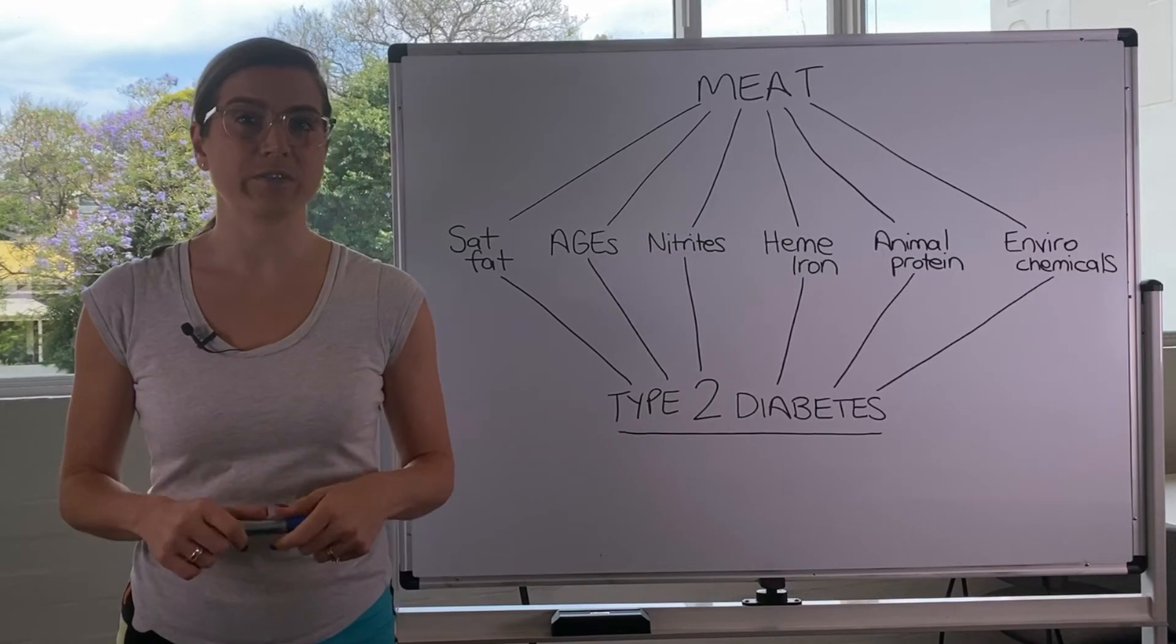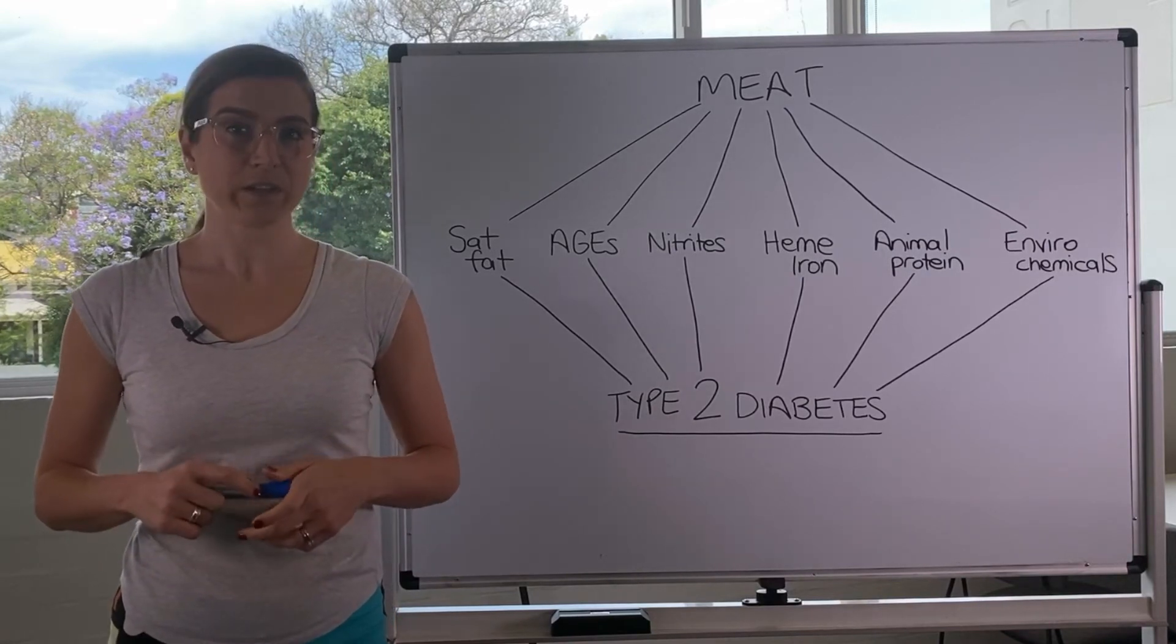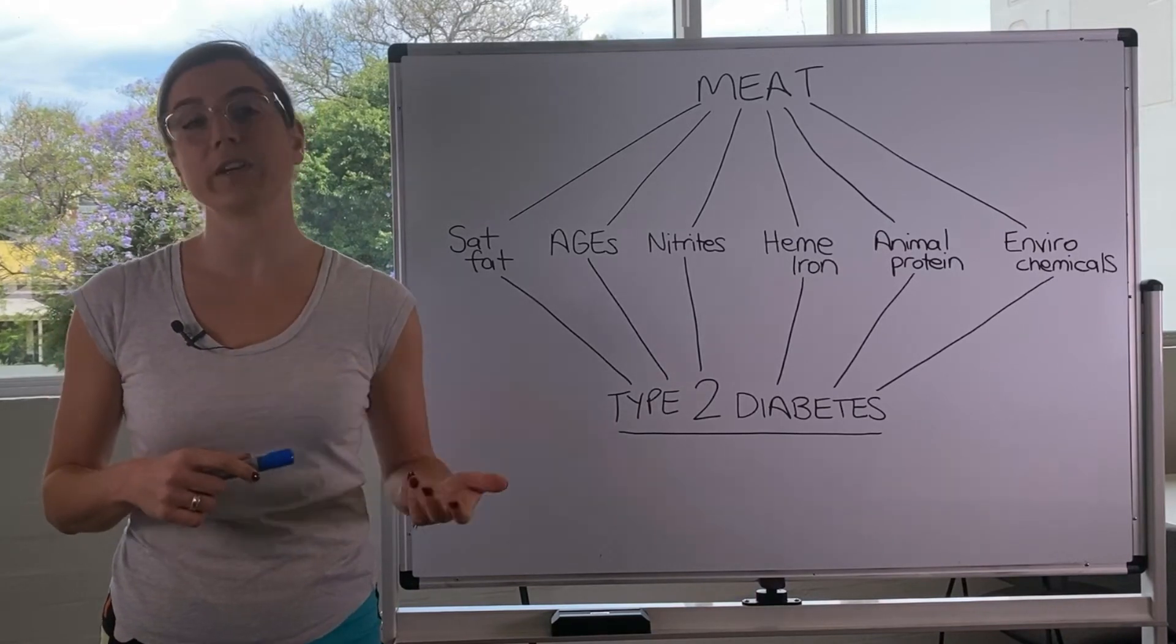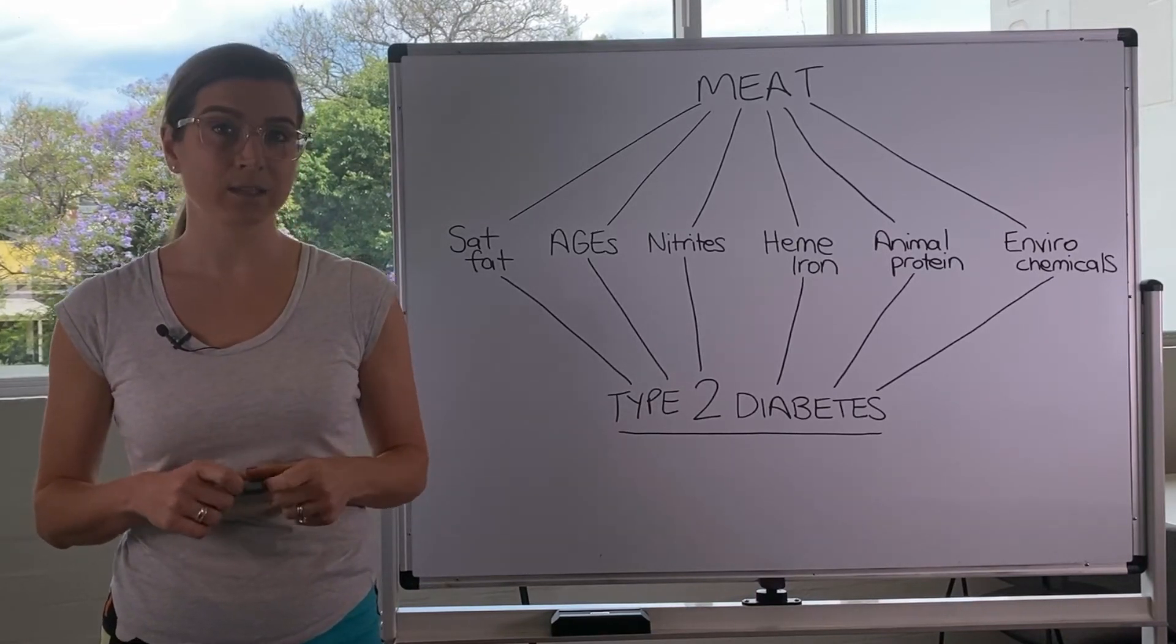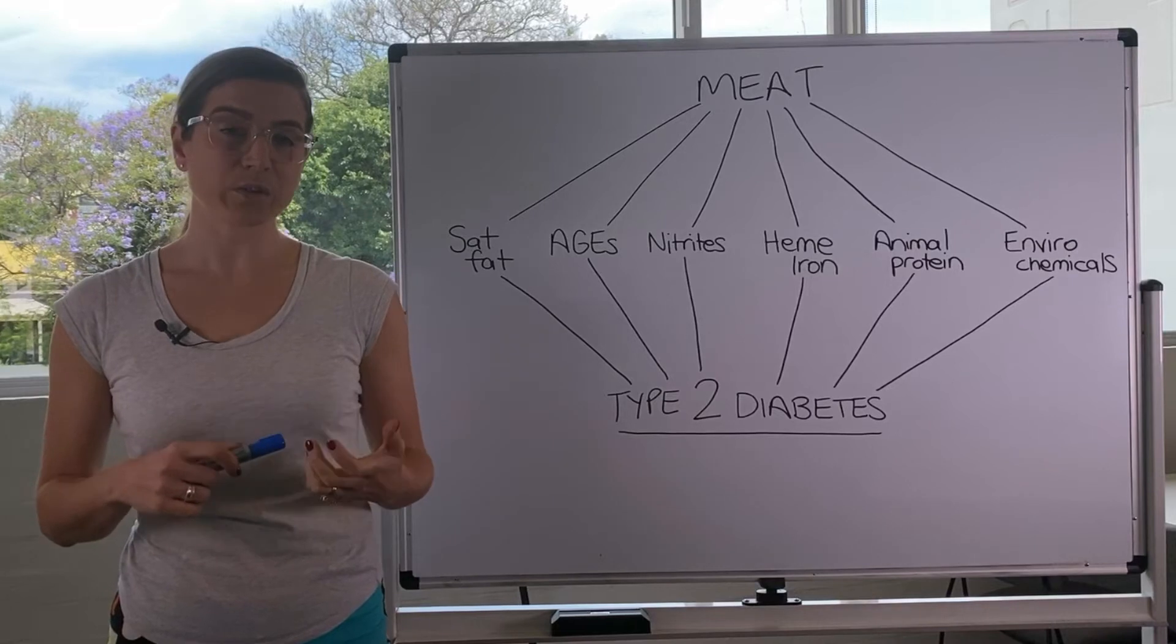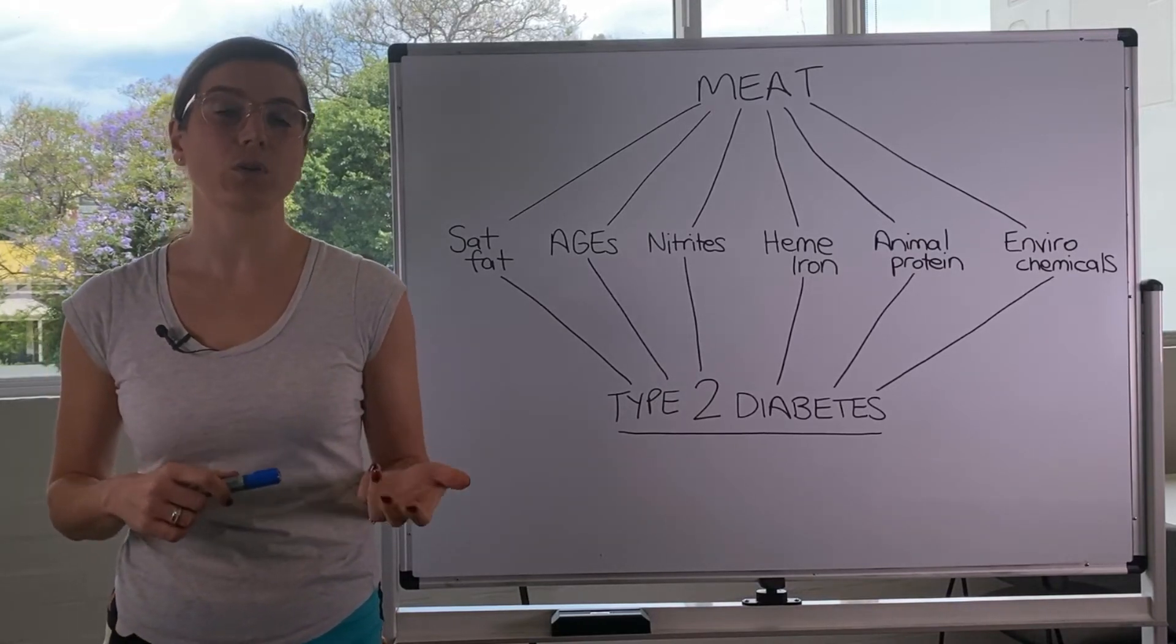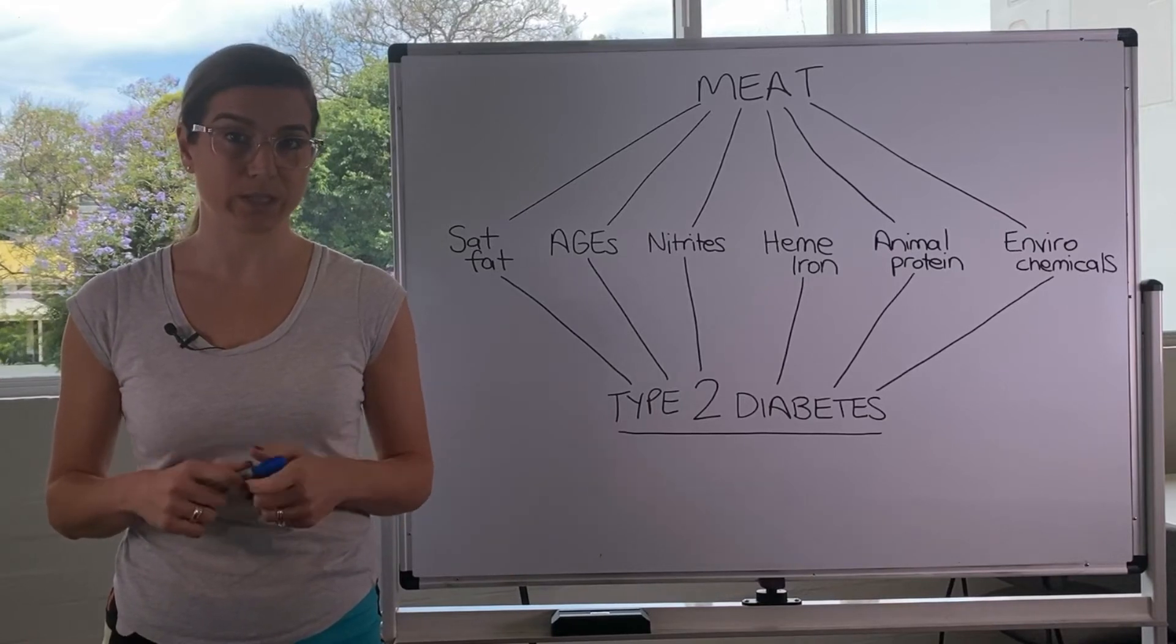saturated fat. Saturated fat which again comes from animal products, all your meat, fish, dairy and eggs. So saturated fat will readily get into your cells and it can block glucose out, contributing to insulin resistance.